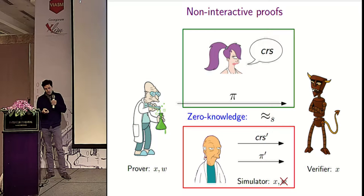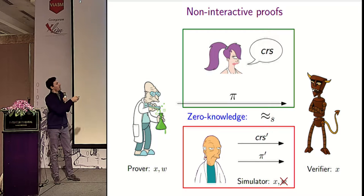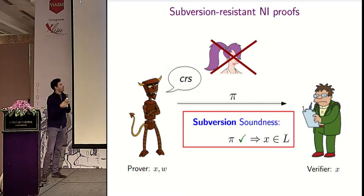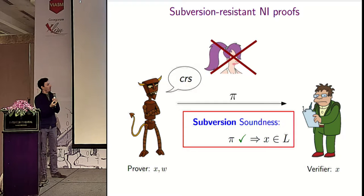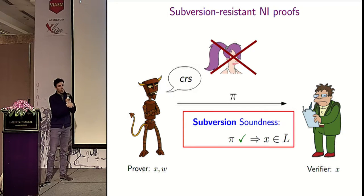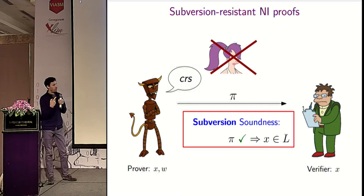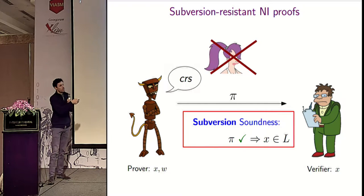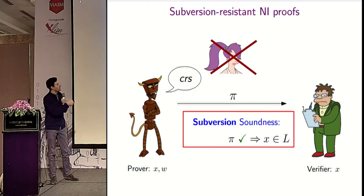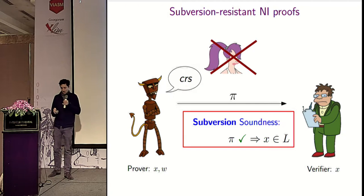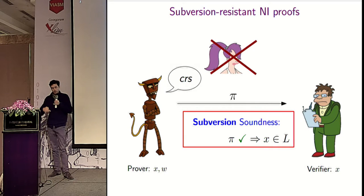We now consider notions where the CRS is not trusted. We consider subversion soundness, where again the adversary's task is to compute a proof of a wrong statement, but we now let the adversary choose the CRS. Subversion soundness means that even if the adversary chooses the CRS, if a proof verifies, then the statement is true.